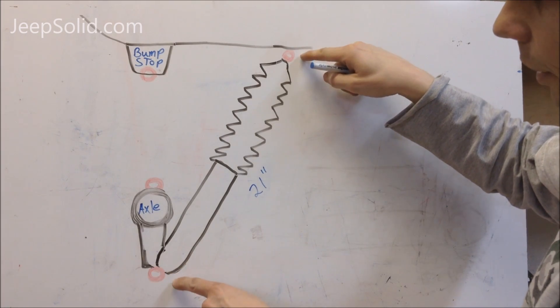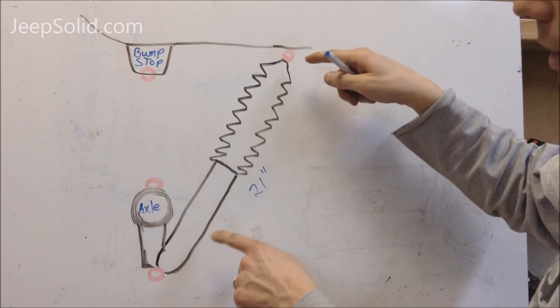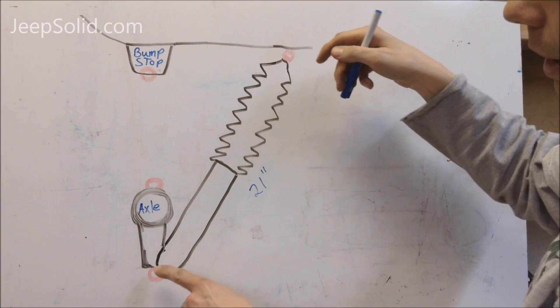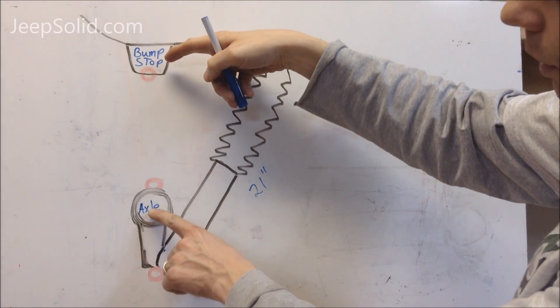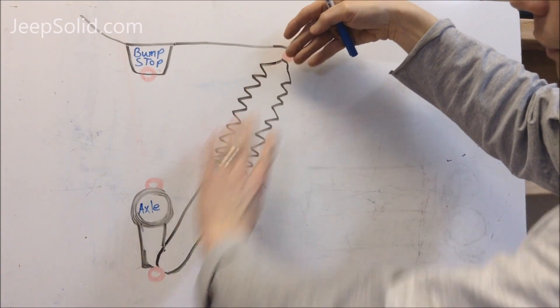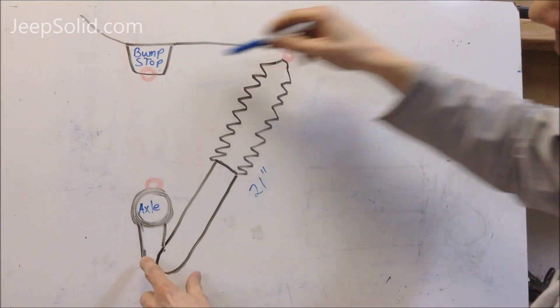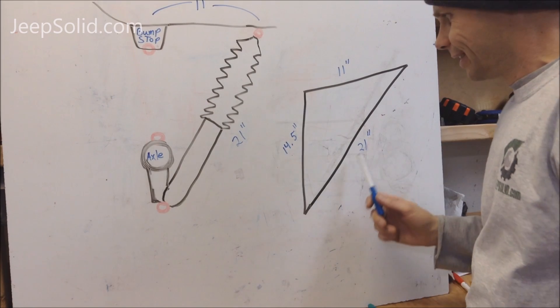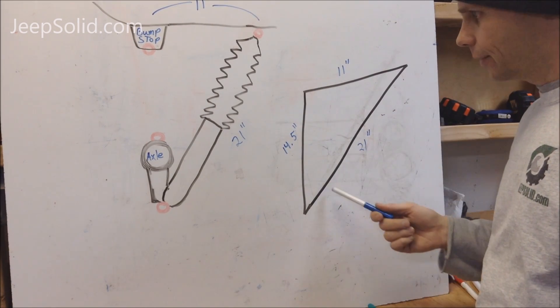Now figuring out our compressed length of the shock, that's a little bit different, because as the axle goes up to the bump stop, it's actually going to change the length of the triangle. Essentially, this is a triangle here. So I drew the triangle out here.